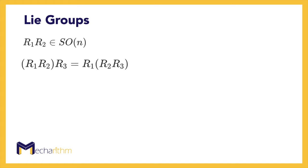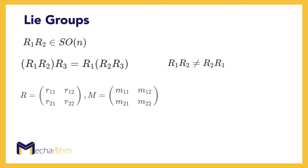The group has the associativity property, meaning that rearranging the parentheses doesn't change the result. Note that the multiplication of rotation matrices is associative but not generally commutative. Rotations are only commutative for the special case of rotation matrices in SO(2). To show that, suppose that R and M are two rotation matrices in the special orthogonal group SO(2), where because of the case for planar rotations that we saw in the previous lesson, the diagonal terms are the same and the off-diagonal terms are opposite to each other. Thus, with an easy calculation, we can see that the multiplication of R and M would commute.